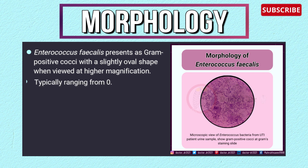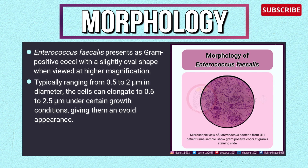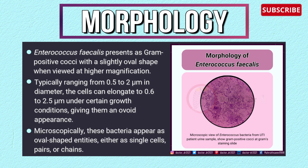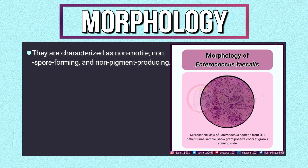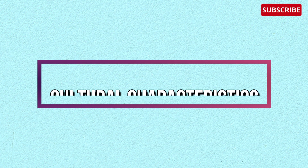Morphology of Enterococcus faecalis: it presents as gram-positive cocci with a slightly oval shape when viewed at higher magnification, typically ranging from 0.5 to 2 micrometers in diameter. Cells can elongate to 0.6 to 2.5 micrometers under certain growth conditions, giving them an ovoid appearance. Microscopically, these bacteria appear as oval-shaped entities either as single cells, pairs, or chains. They are non-motile, non-spore-forming, and non-pigment-producing, and have the ability to develop pili and form biofilms.